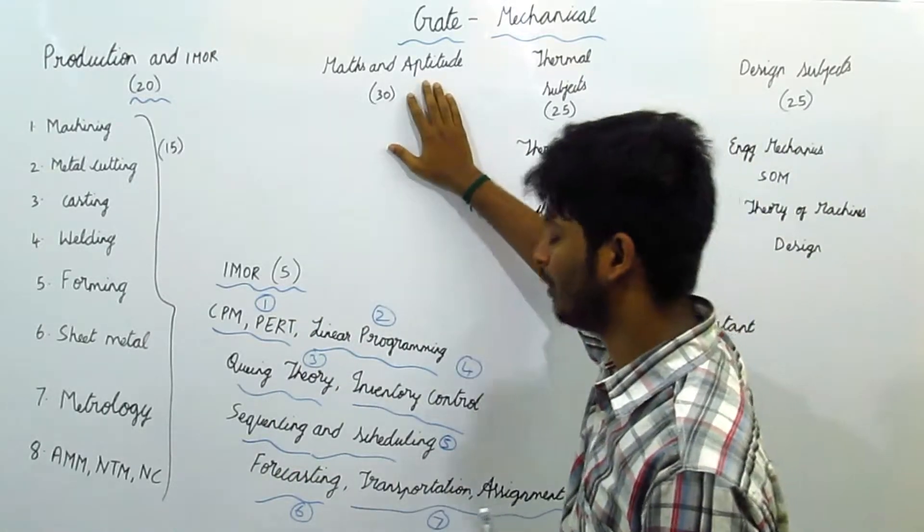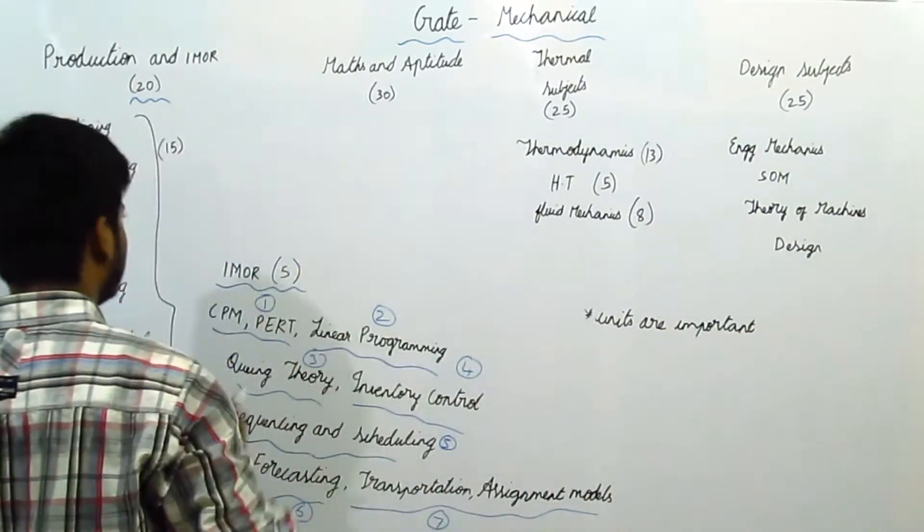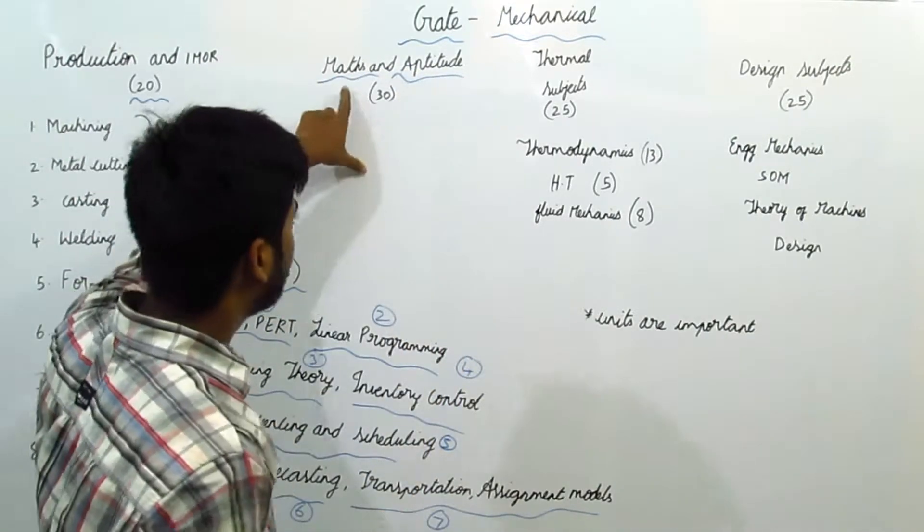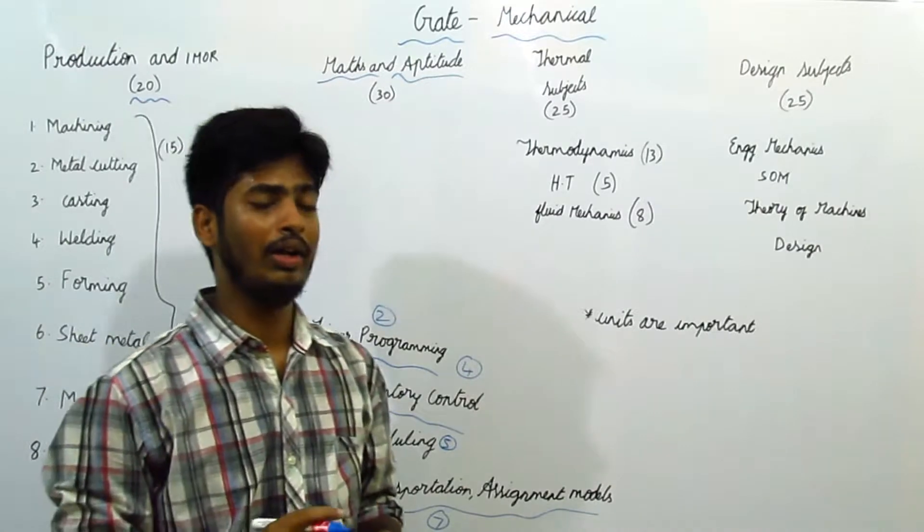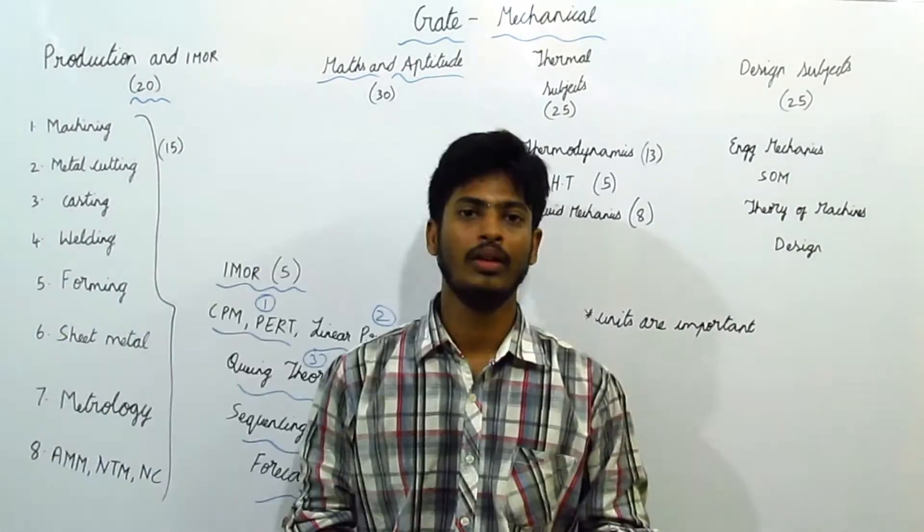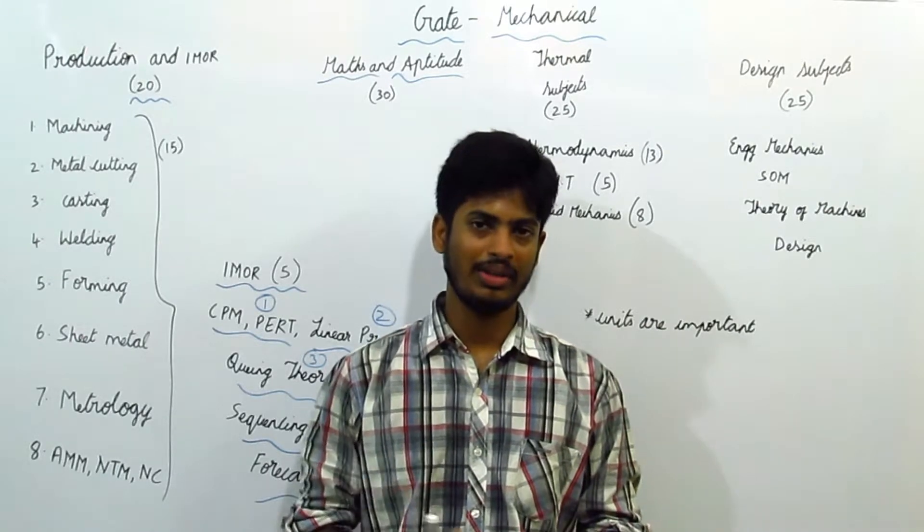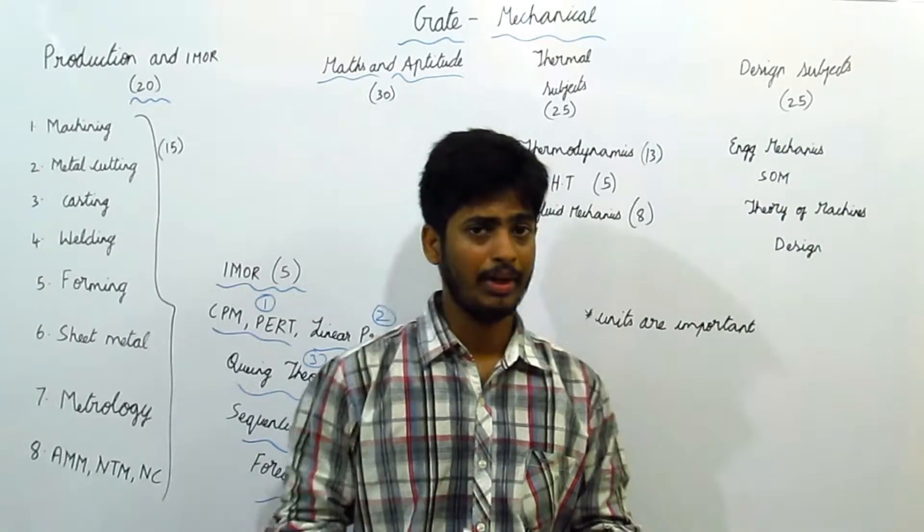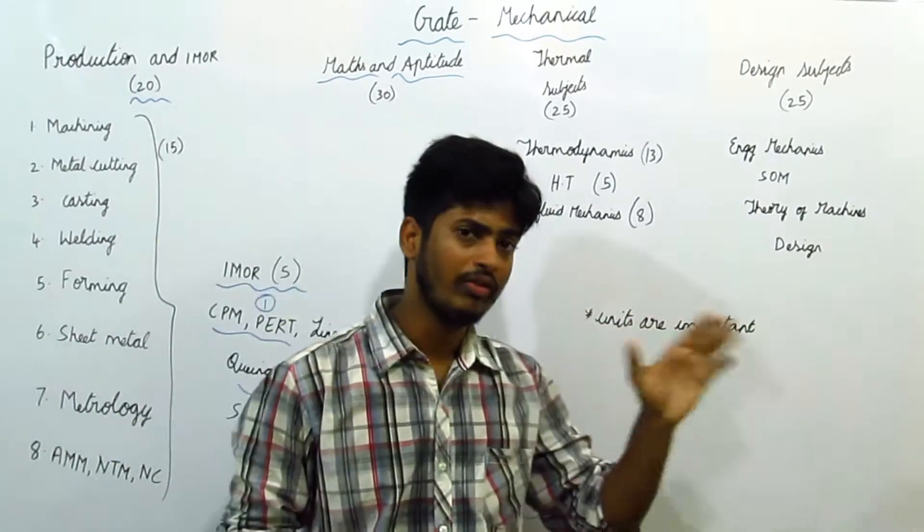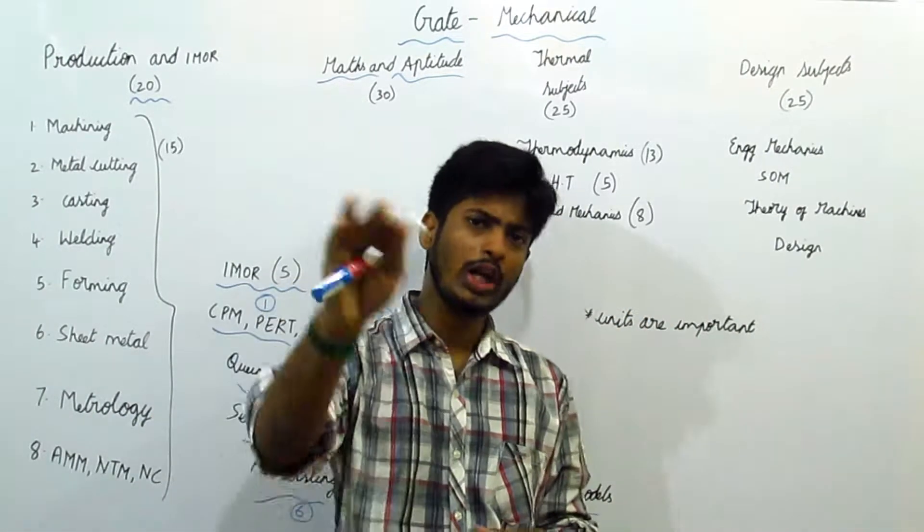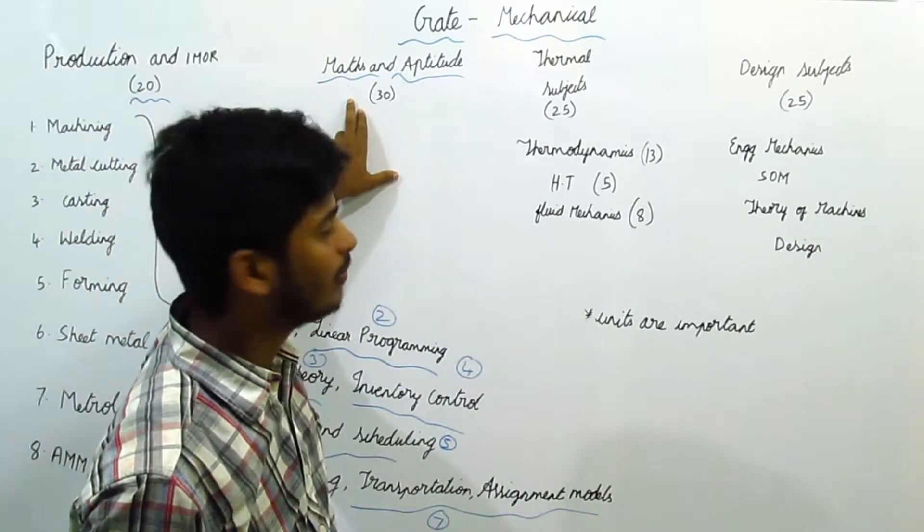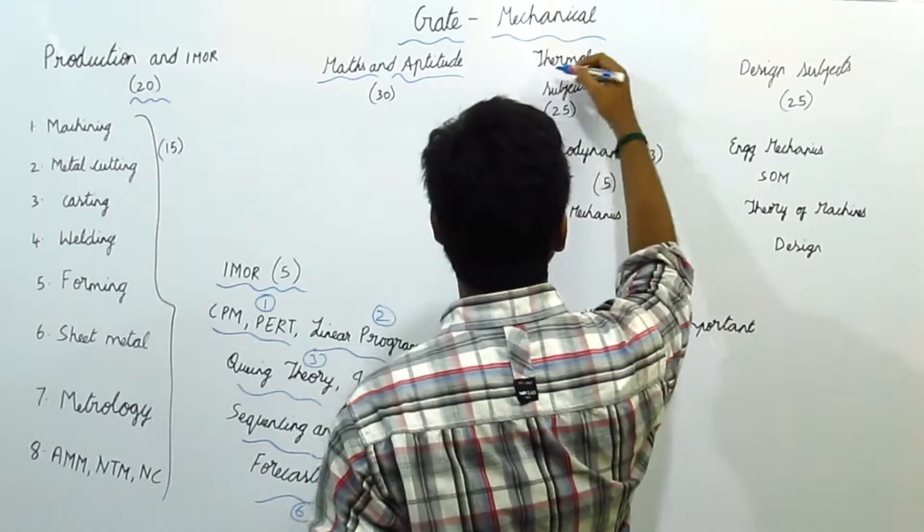And coming to maths and aptitude. Maths and aptitude is considered as one of the most important papers for Gate Exam. These two combined to form 30 marks. I'll tell you why maths and aptitude are so much important. When the two students are having same marks, then they will compile your maths and aptitude mark in order to give rank. So, it will push your rank forward when you have maximum marks and maths and aptitude.